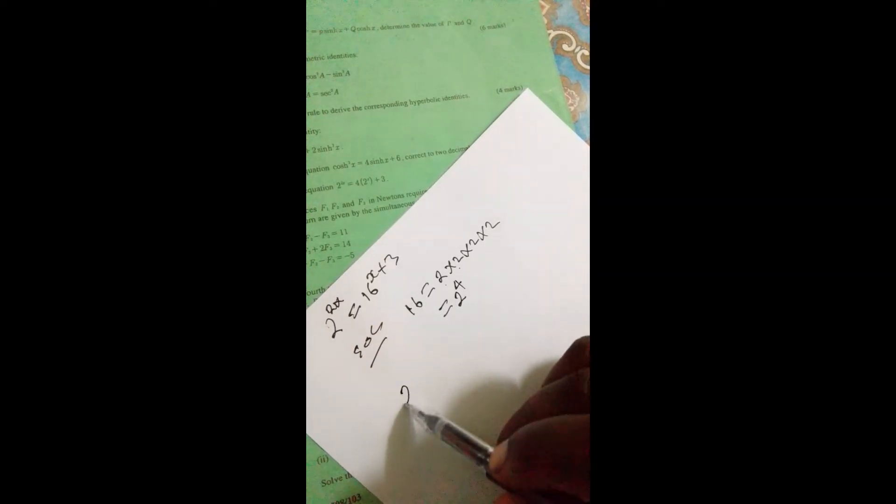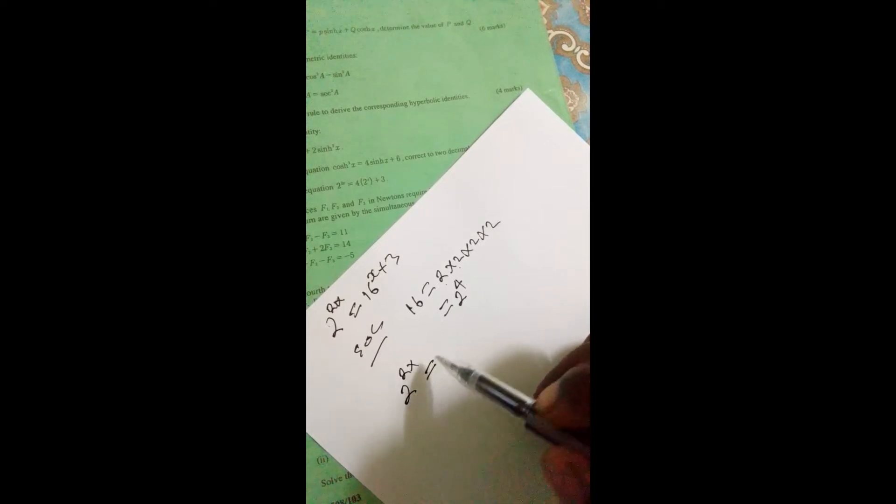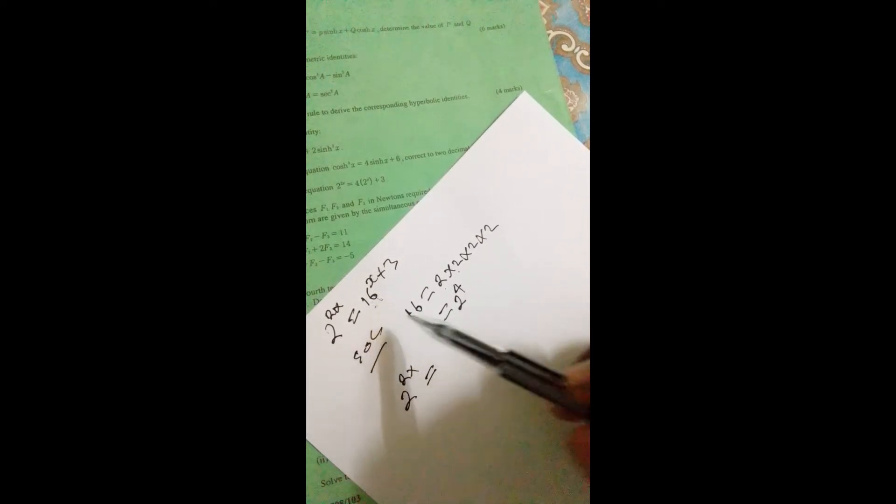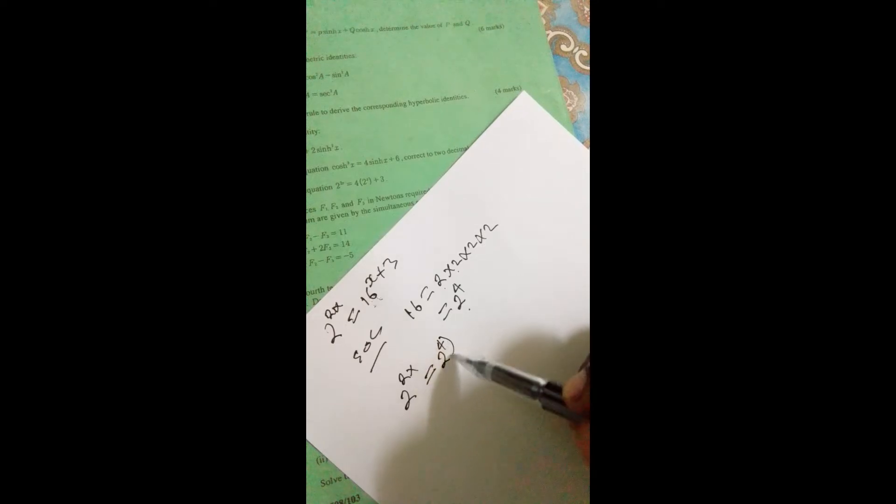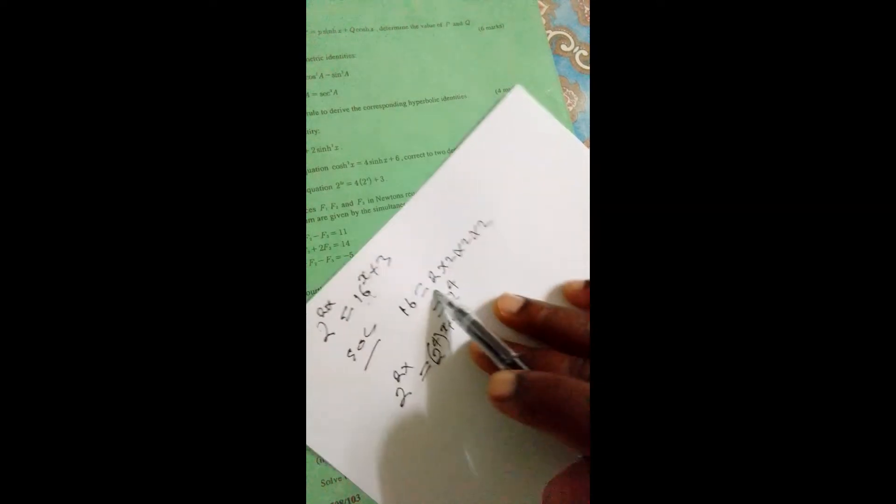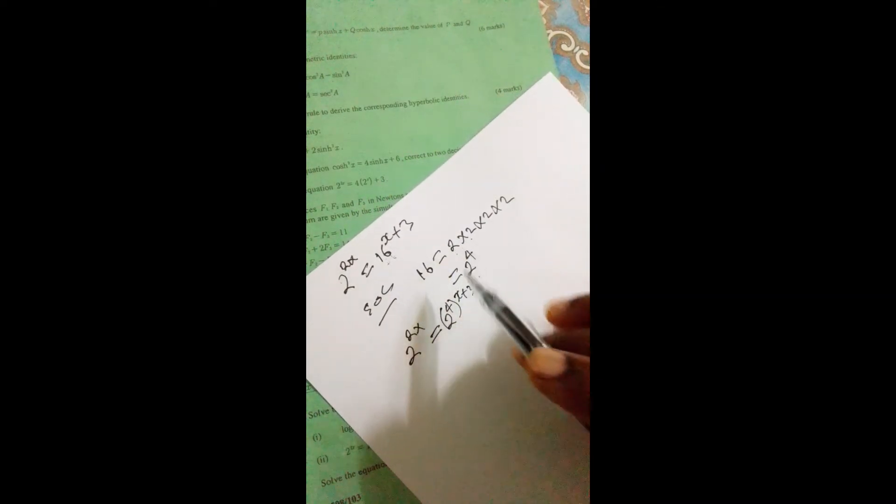Therefore we can write this equation as 2 raised to 2x equals—now replace 16 with 2 raised to 4—so 16 will be 2 raised to 4, but remember it's raised to x plus 3.